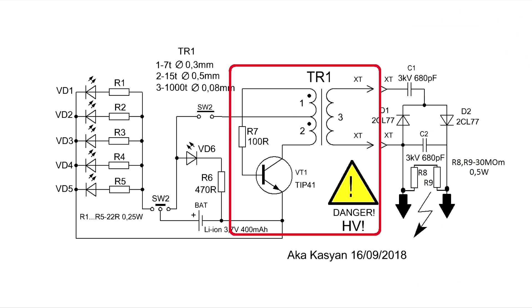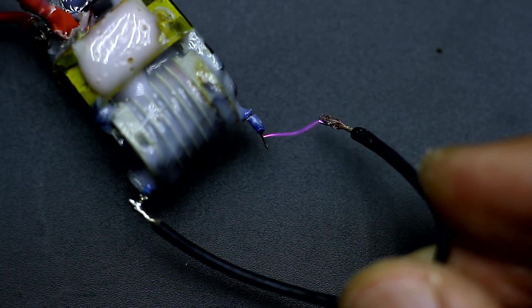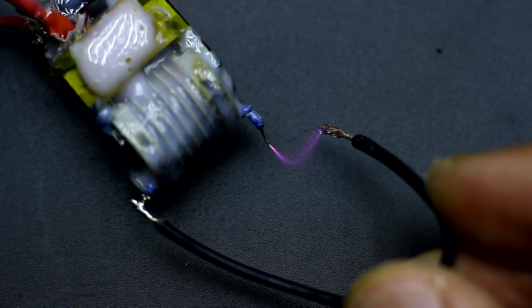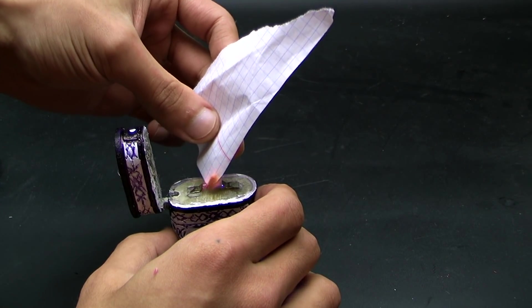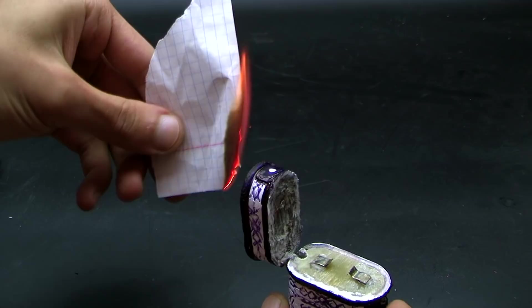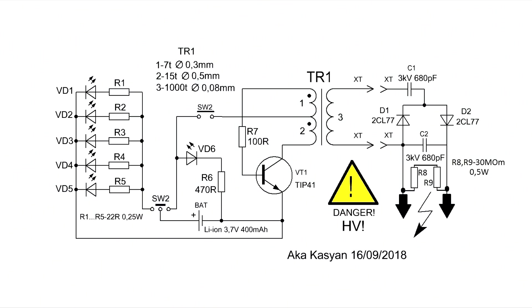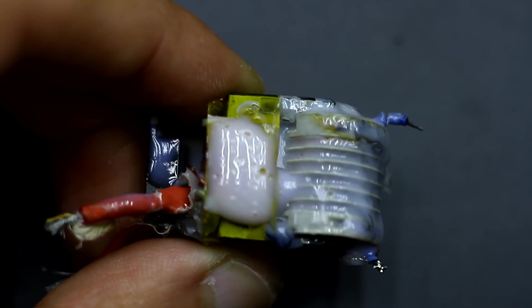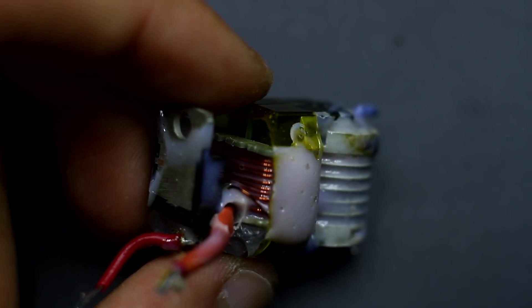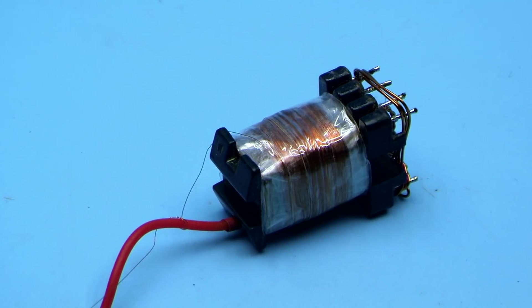This part forms the high-frequency high voltage. At the output, the voltage is more than 3000 volts. The temperature of the arc is very high, and it can easily burn combustible materials. The circuit is a regular blocking oscillator on a bipolar transistor. A ready-made transformer was used. You can buy it at AliExpress. Links will be in the description.